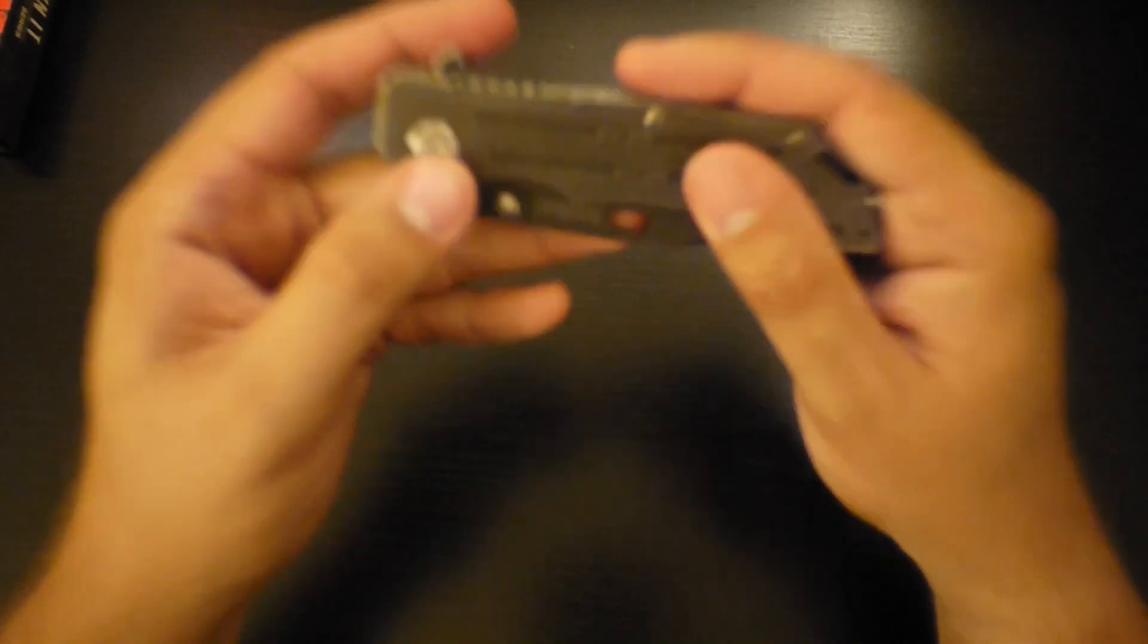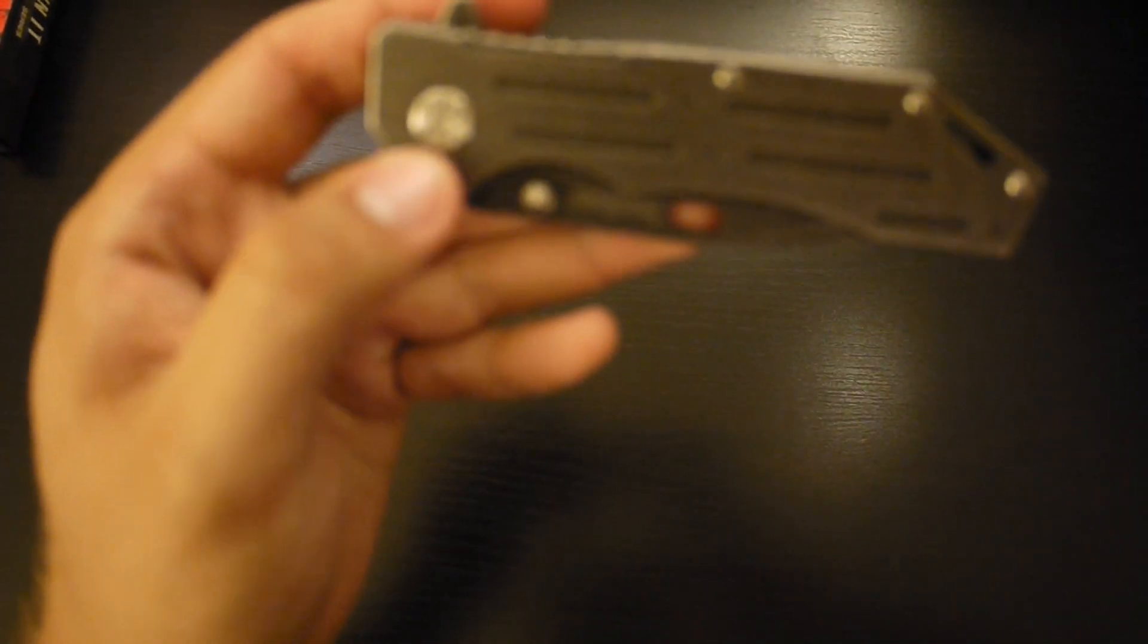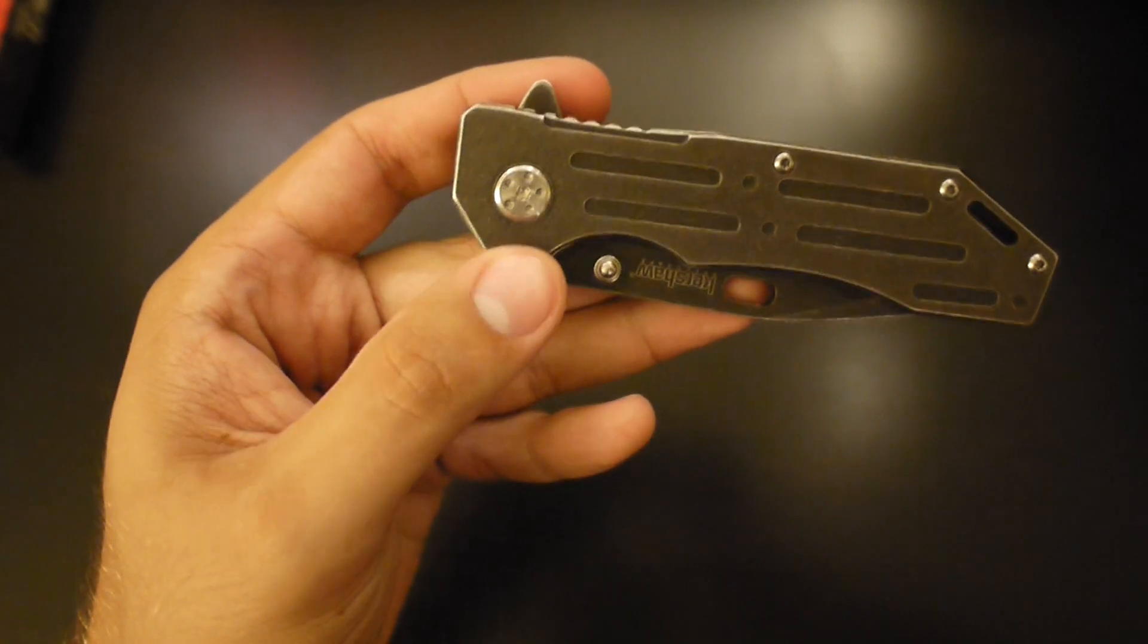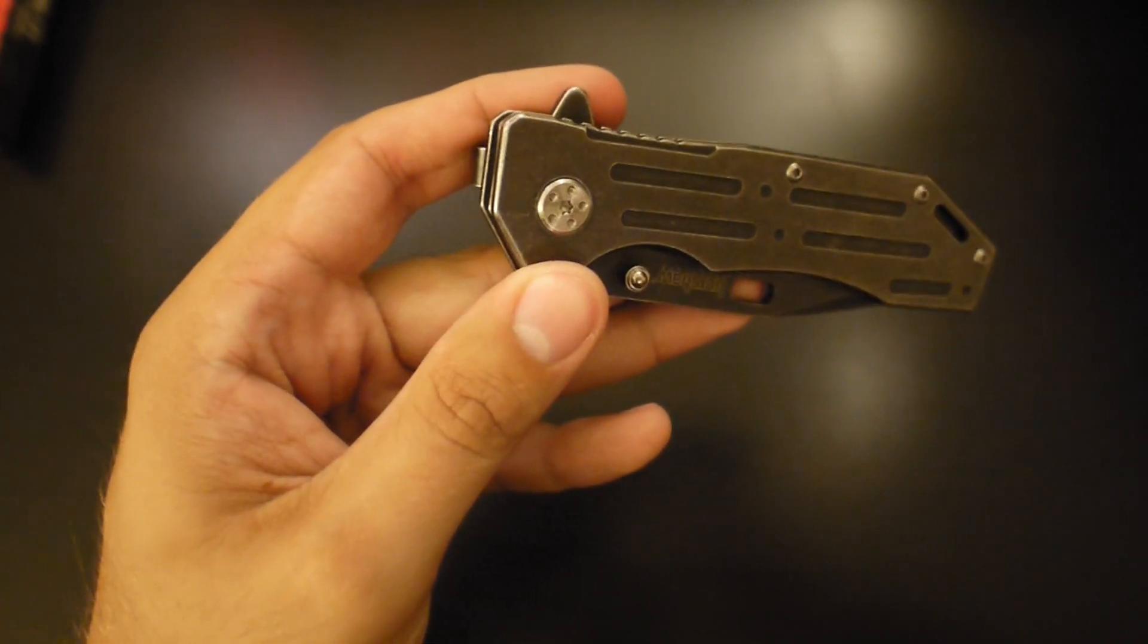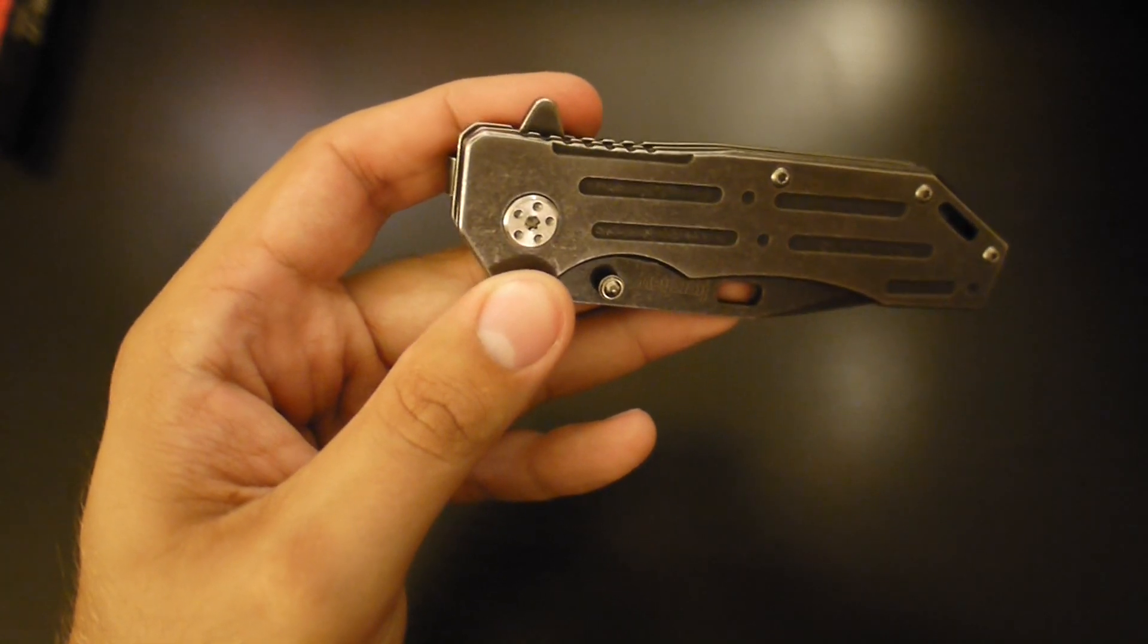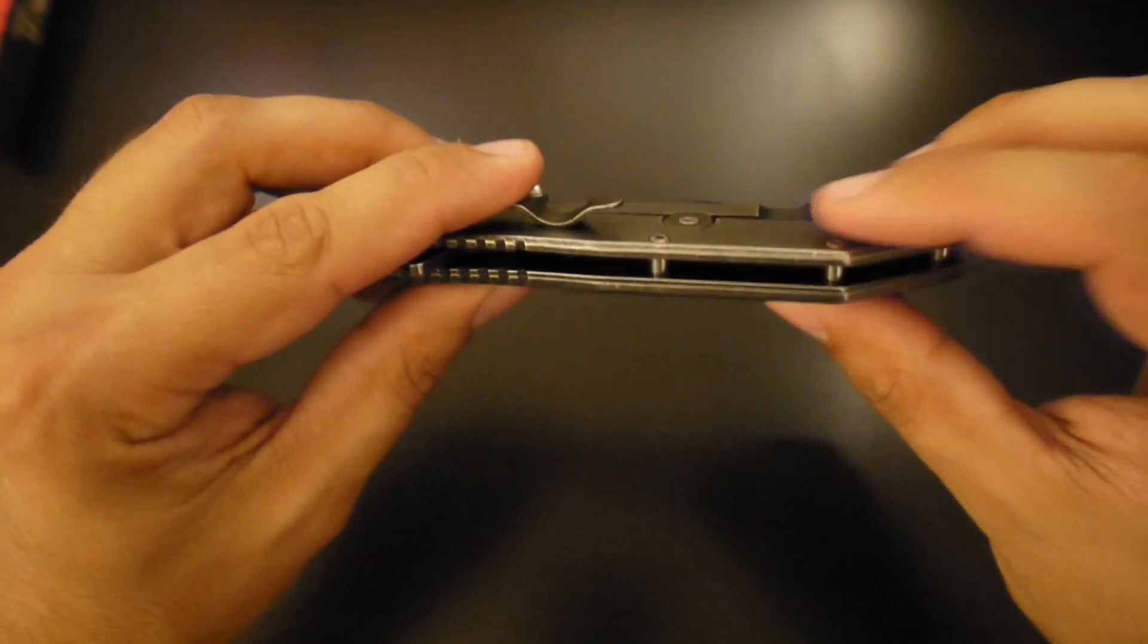And this is pretty neat too, the little pivot point there. It's got this nice little polished stainless steel pivot. Adds to the knife. And yeah it's flow through construction.